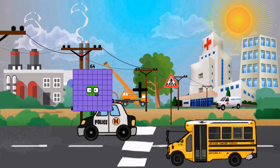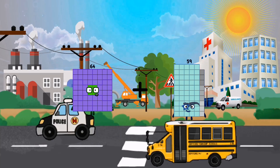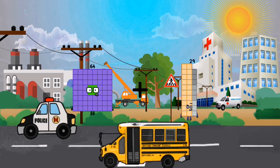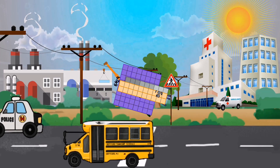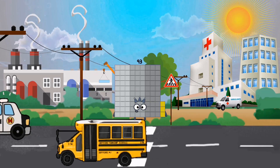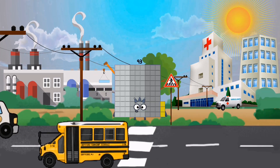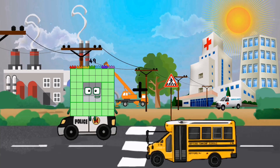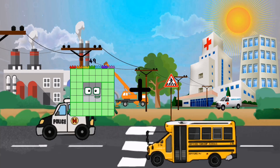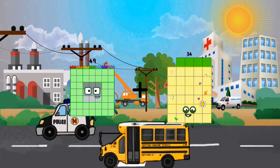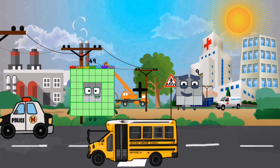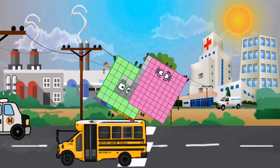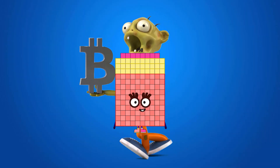64 plus 29 equals 93. 49 plus 89 equals 138.